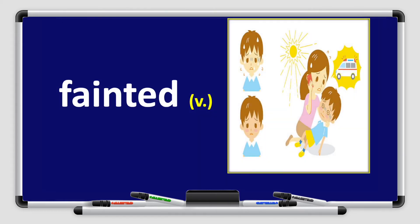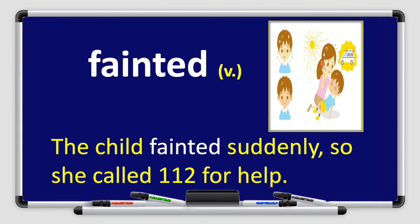Next we have the word fainted. Fainted is a verb. Look at the picture — the boy suddenly fainted. Let's use it in another example: The child fainted suddenly, so she called 112 for help.